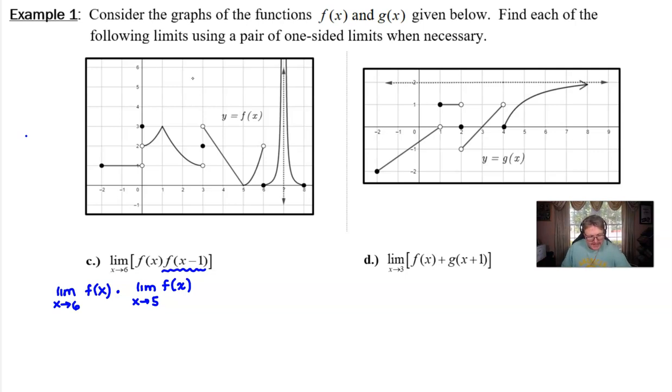Now once again the limit of f of x as x approaches six immediately grinds to a halt because we have a does not exist and you cannot operate with does not exist inside of a multiplication. But that doesn't mean necessarily that our limit of this product won't exist. So what you do at this point is you modify your limit approach using a one-sided approach and fulfill those two limits.